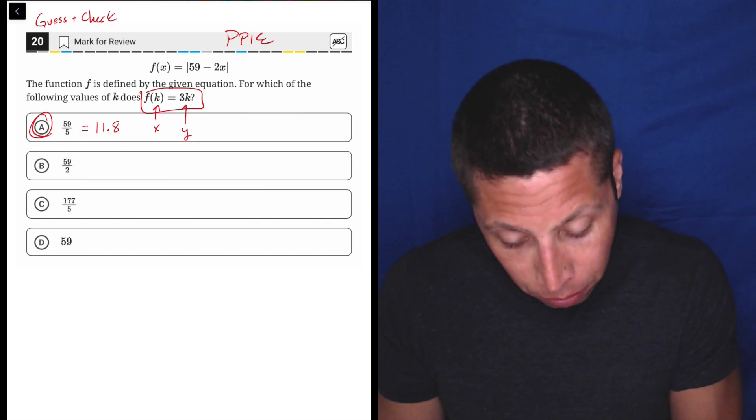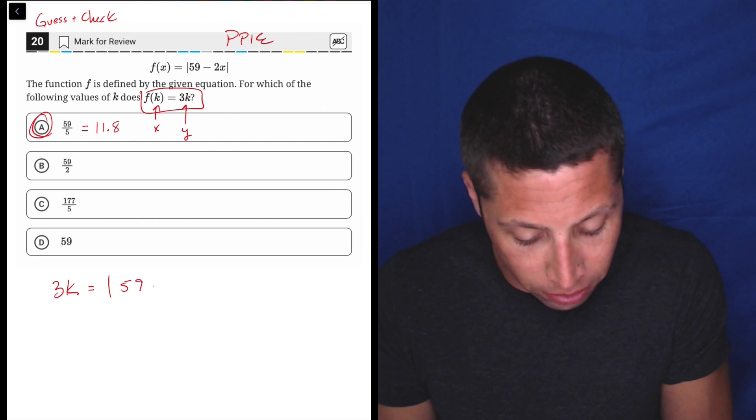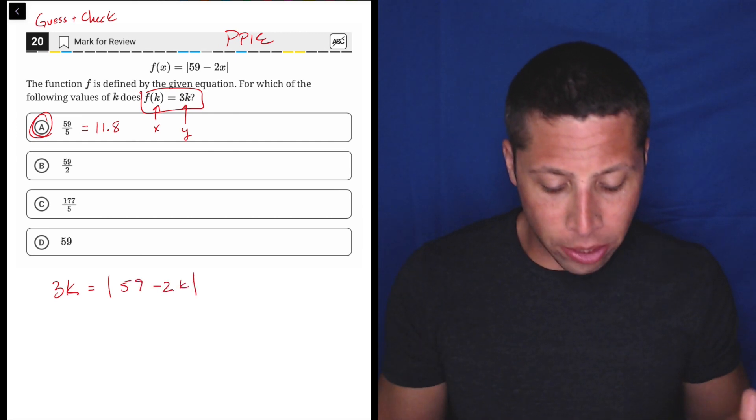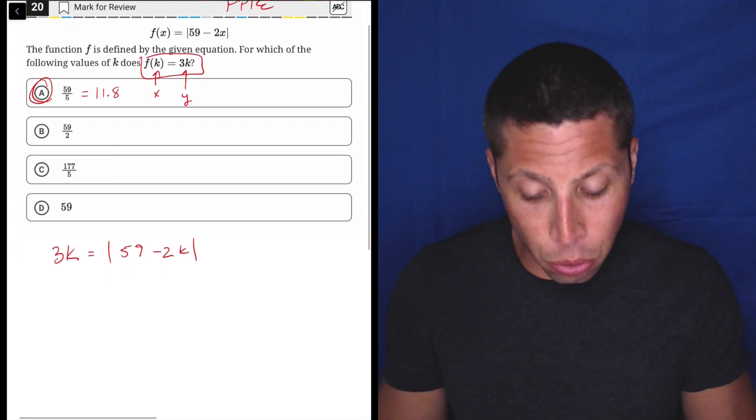That's kind of what this is, where X is K and Y or F of X is the 3K. So if we were to rewrite this, we have 3K is equal to the absolute value of 59 minus 2K. And with absolute value equations, when we want to solve them, we need to make two equations.